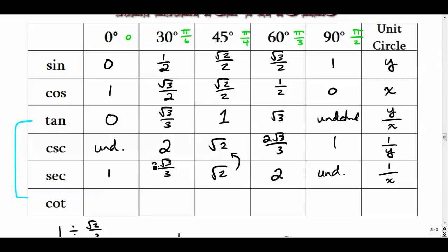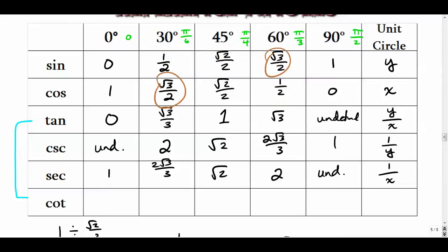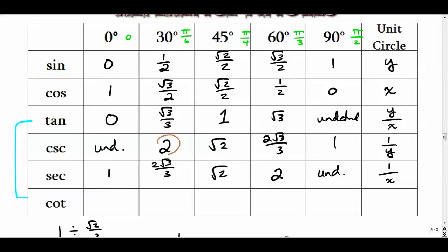There's a nice symmetry worth noting: the sine of 30° and cosine of 60° are the same; the sine of 60° and cosine of 30° are the same; and the sine of 90° and cosine of 0° are the same. The same symmetry holds for cosecant and secant — the undefined values match up, the 2s match up, and corresponding values mirror each other.